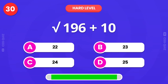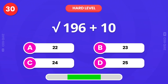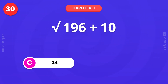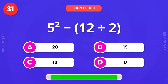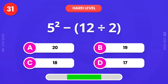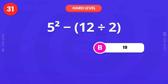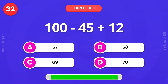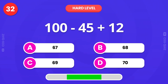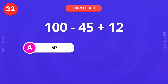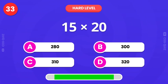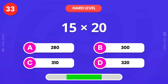Choose the correct answer. The answer is 24. Now, how about this? That's exactly 19. What is 100 minus 45 plus 12? The answer is 67. Multiply 15 times 20. 300.